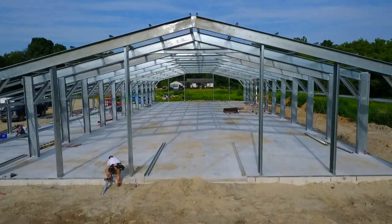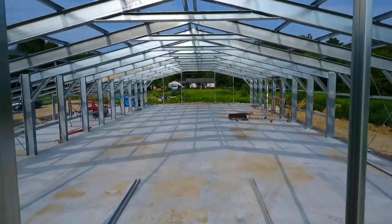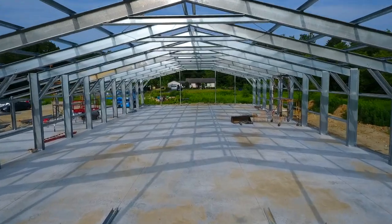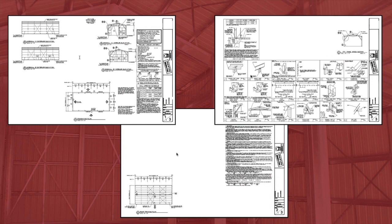ACT Dimensions provides you with a host of information to make erecting your cold-formed building easy. Understanding this information is critical for your customer and their builder. The key documents your customer will receive are the engineering drawings. After paying for and requesting engineering, you will receive these documents directly from the engineer. These plans are required to obtain permits for your building and contain all structural information on your building.